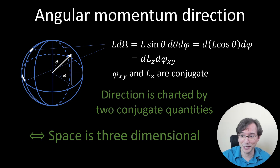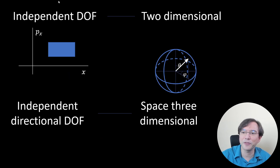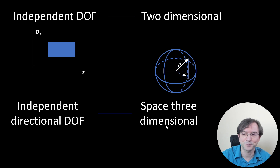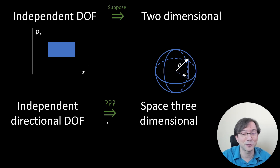So we have a directional degree of freedom charted by two conjugate quantities. Since directions are two-dimensional, space is indeed three-dimensional. To summarize so far: independent degrees of freedom are two-dimensional, and the independent directional degree of freedom is also two-dimensional, which means space is three-dimensional. Can we turn this observation into a formal argument? Suppose each independent degree of freedom is two-dimensional — can we show that an independent directional degree of freedom must therefore be two-dimensional, and hence space must be three-dimensional?